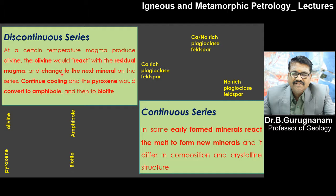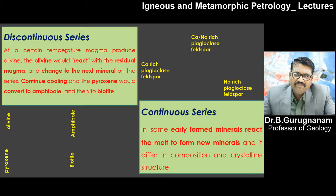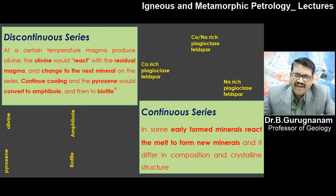Back in 1885, he dedicated himself to understanding how magma crystallizes from higher temperature to lower temperature, and what variation occurs at different pressure and temperature. He found that there are two series of mineral settlement with temperature-pressure variation: one is the discontinuous series and the other is the continuous series. At a certain temperature, magma produces olivine. The olivine would react with the residual magma and change into the next mineral on the series. With continued cooling, pyroxene will form, then convert to amphibole, and then you will get biotite.